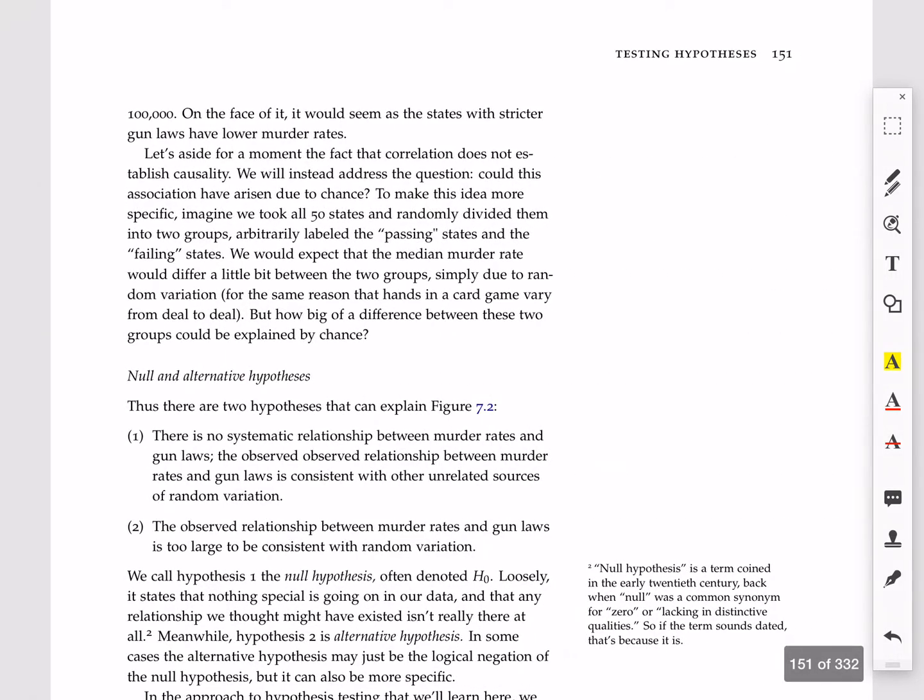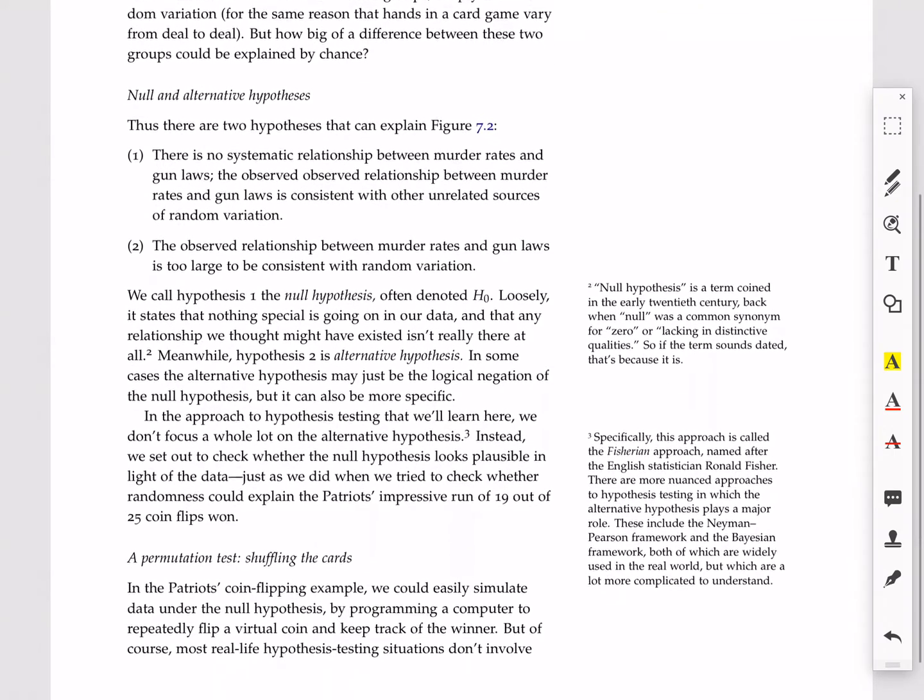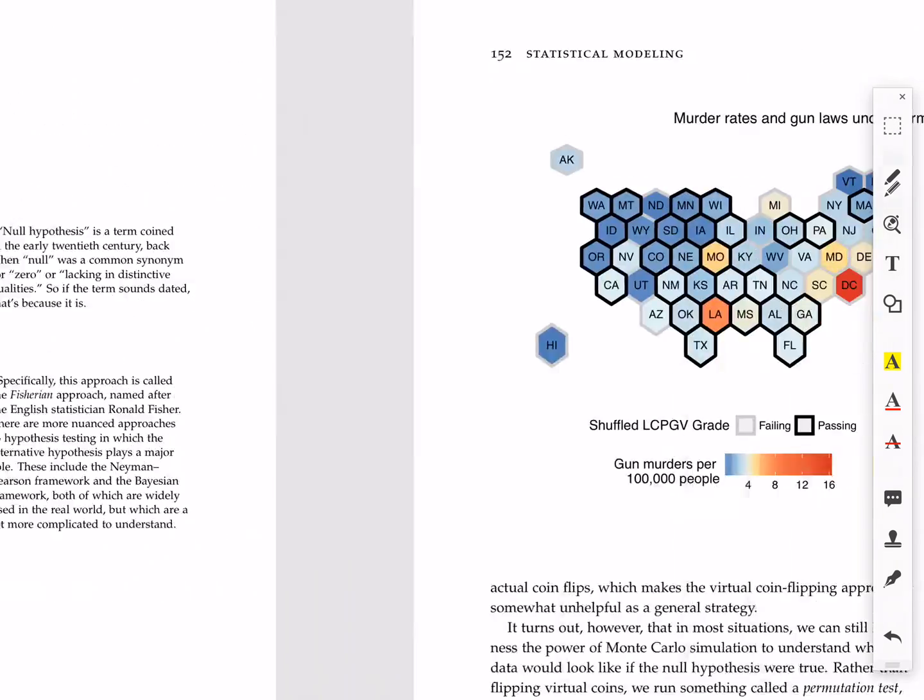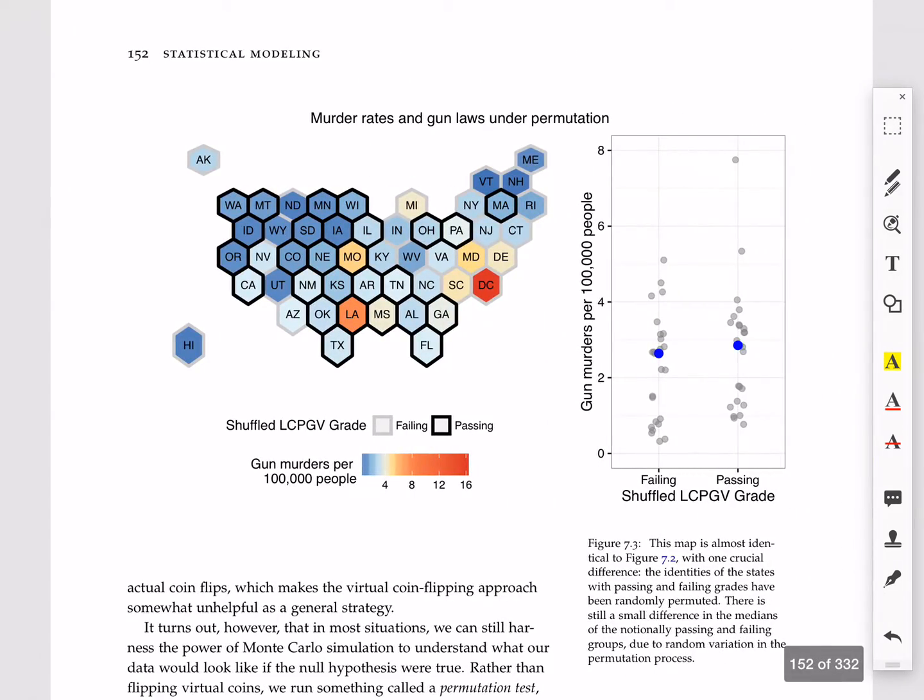Now we come to step three, which is calculate the test statistic's probability distribution under the assumption that the null hypothesis is true. Now, if you go back to the Patriots coin flipping example, it was really easy to simulate data under the null hypothesis. We could just code up a Monte Carlo simulation that would repeatedly flip a virtual coin 25 times and keep track of the winner. But this is one of those much more common real-life hypothesis testing situations that don't involve coins. Imagine that. And that makes this virtual coin flipping approach by Monte Carlo simulation pretty unhelpful as a general strategy, as compelling as an approach it is for the Patriots coin flipping example. However, in most situations, we still can use this power of computers, the power of Monte Carlo simulation, to understand what our test statistic might look like if the null hypothesis were true, and that's where a permutation test comes in.